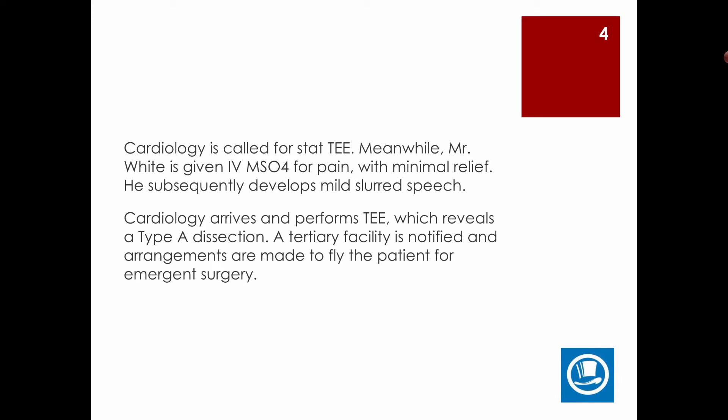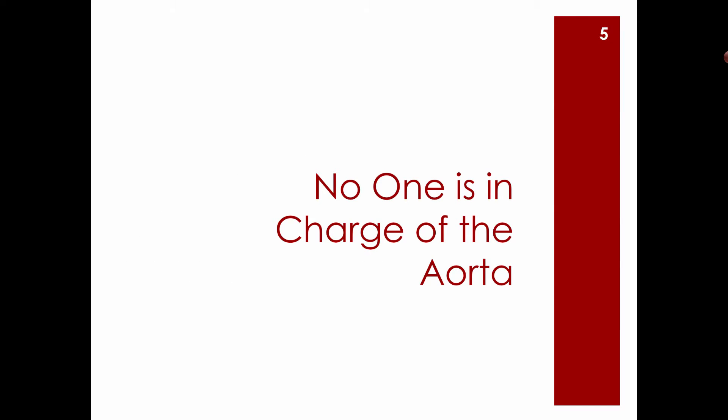Cardiology arrives and performs a transesophageal echo, which reveals a Type A dissection. The tertiary facility is notified and arrangements are made to fly the patient for emergency surgery. Aneurysms, in this case a thoracic aneurysm, are very worrisome — people die from them readily, and they're hard to diagnose.